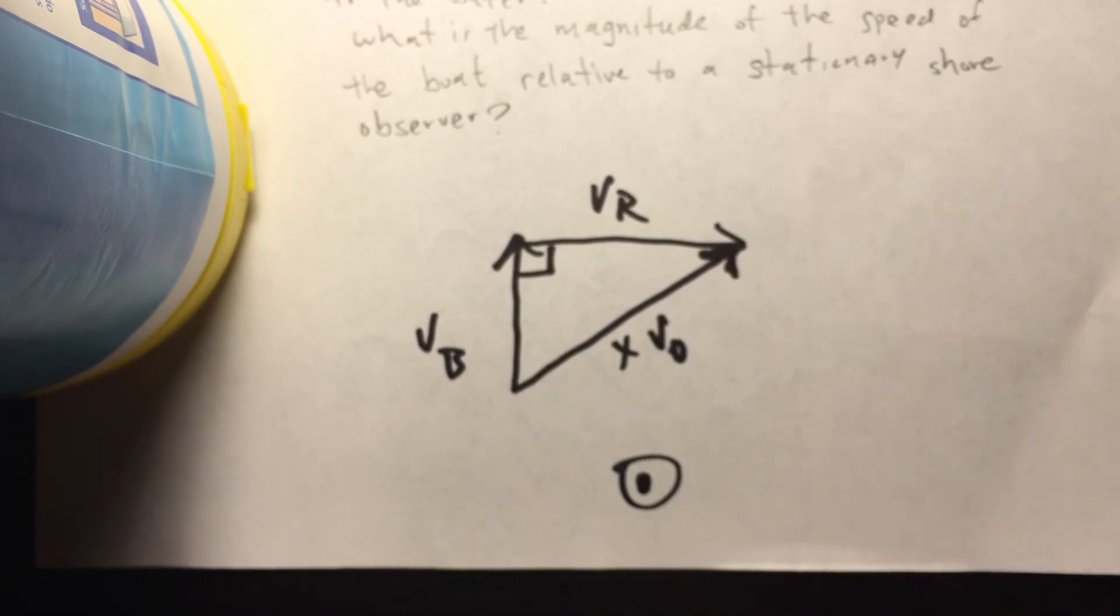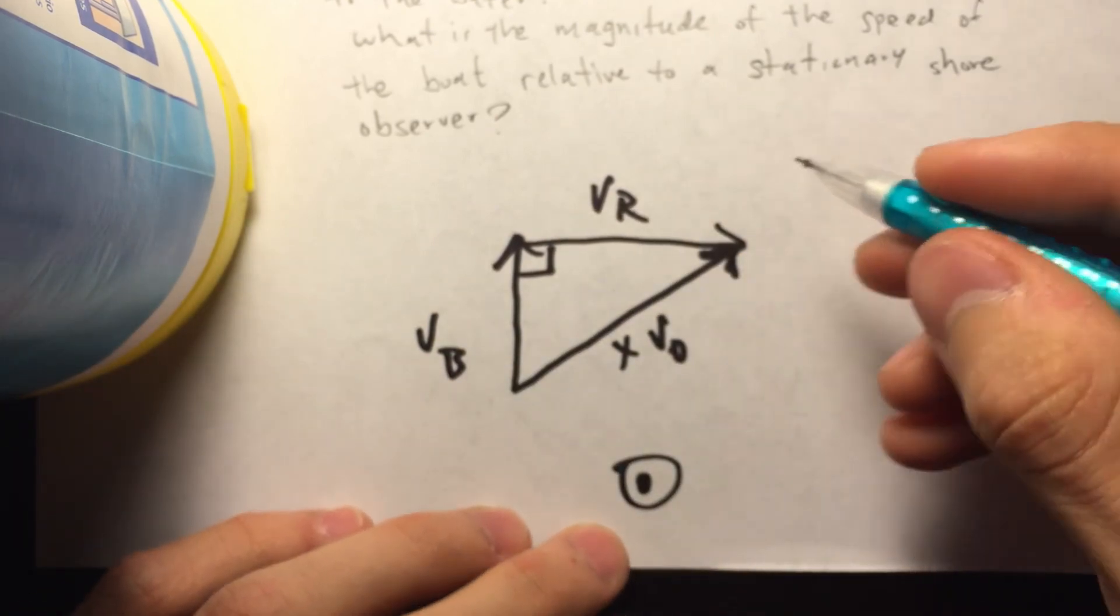So, how do we do this? This is how we do this. We are given this. We are given that. Well, we just employ Pythagorean Theorem.